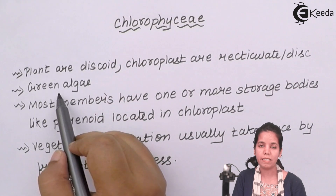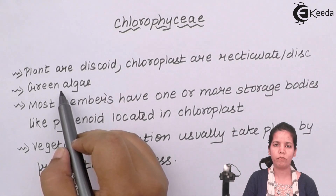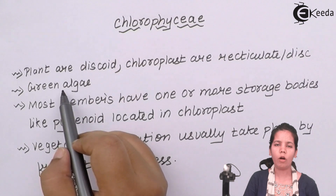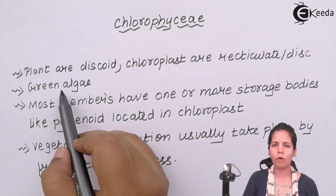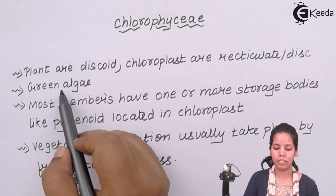Green algae is basically a chlorophyte that lives in humid or aerial conditions and requires very little amount of water to sustain.